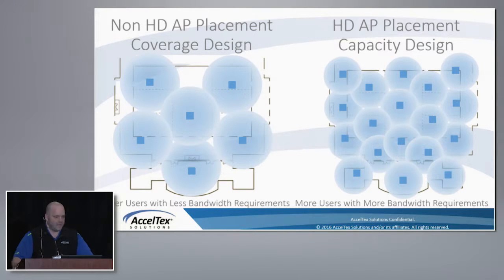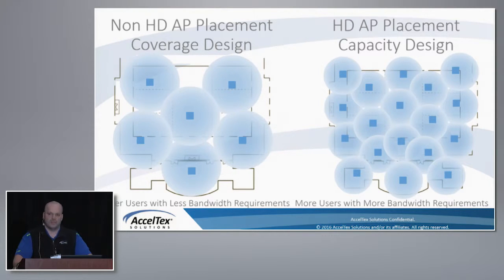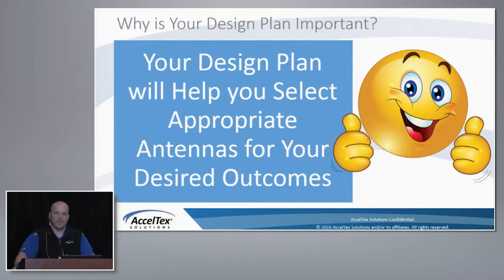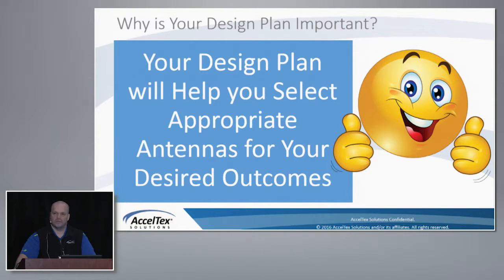On the left-hand side you'll see non-HDA placement for general coverage — carpeted office space, those types of things. On the right-hand side it's more of a high-density deployment: tighter beam widths, tighter patterns, for auditoriums, arenas, or any high-density location. Your design plan will help you select the appropriate antenna solution. Still a high number of applications are omni-driven, but more and more are being driven by high-density deployment with more client devices on the network.